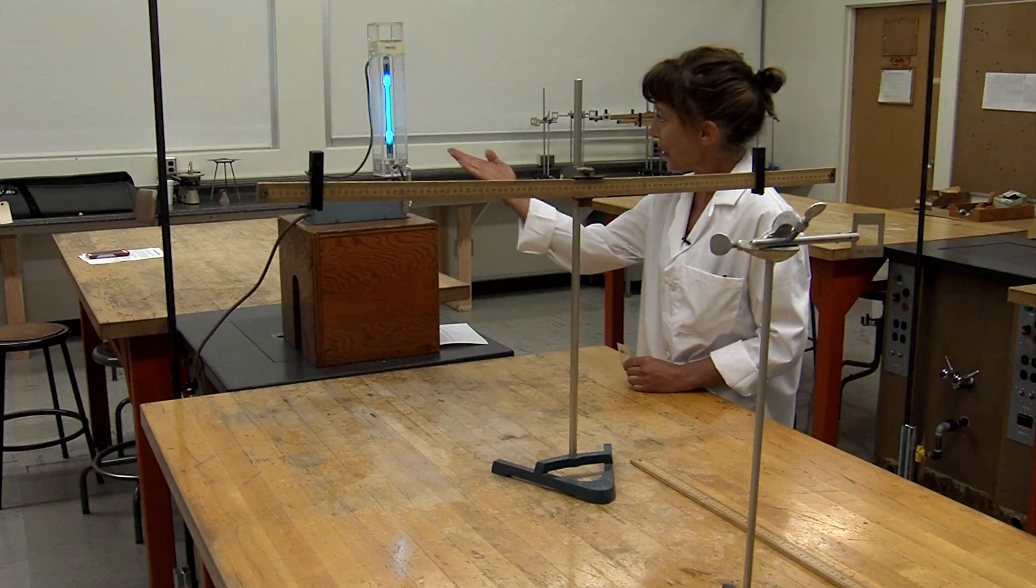Today we'll be using a diffraction grating to determine the various wavelengths in the spectrum of mercury. We'll be using a mercury vapor lamp.